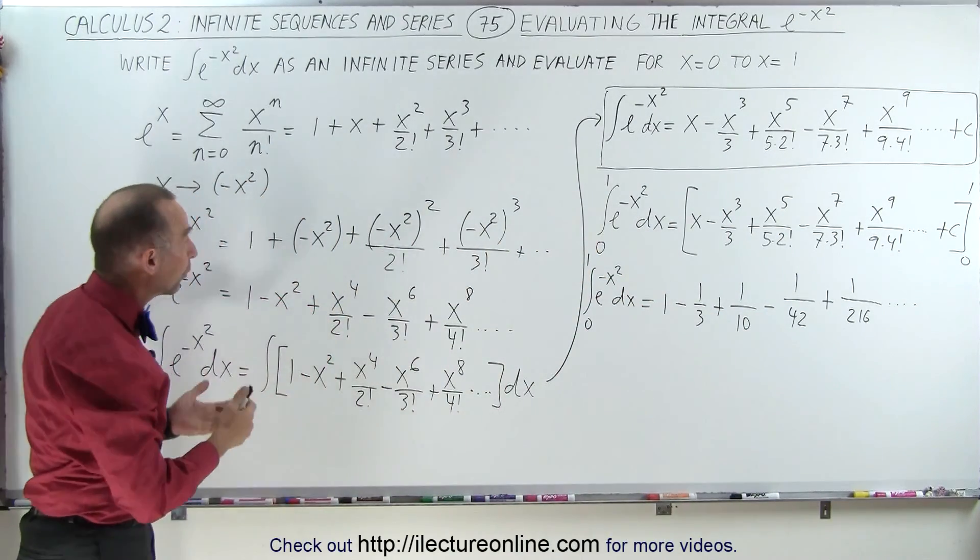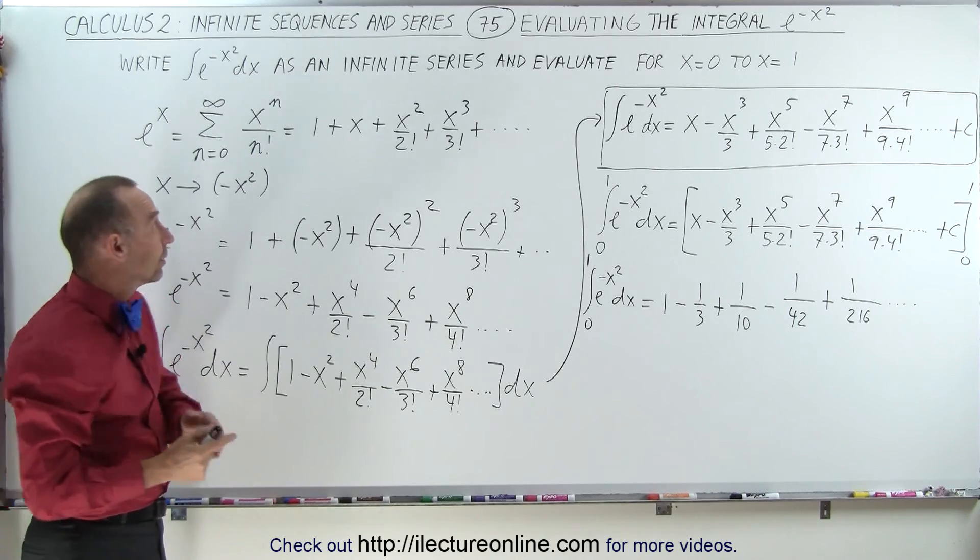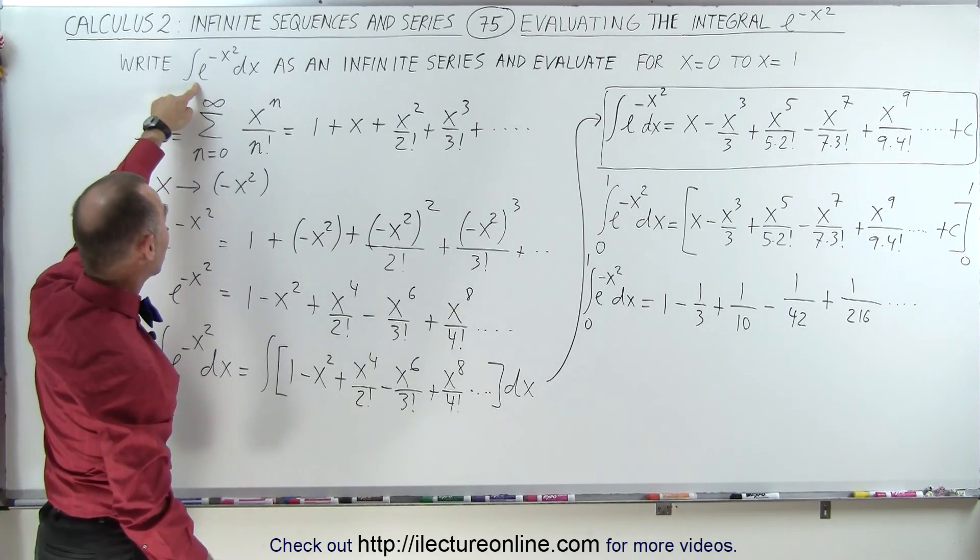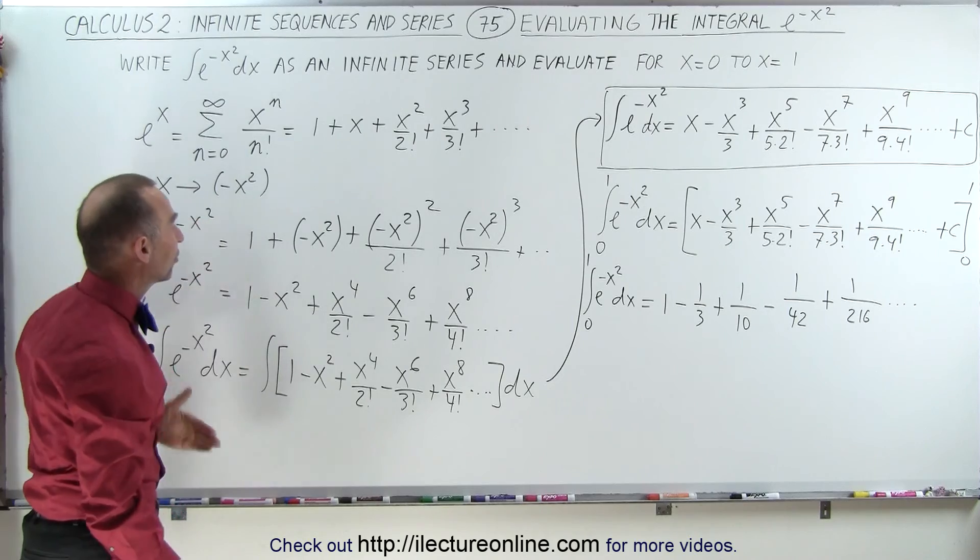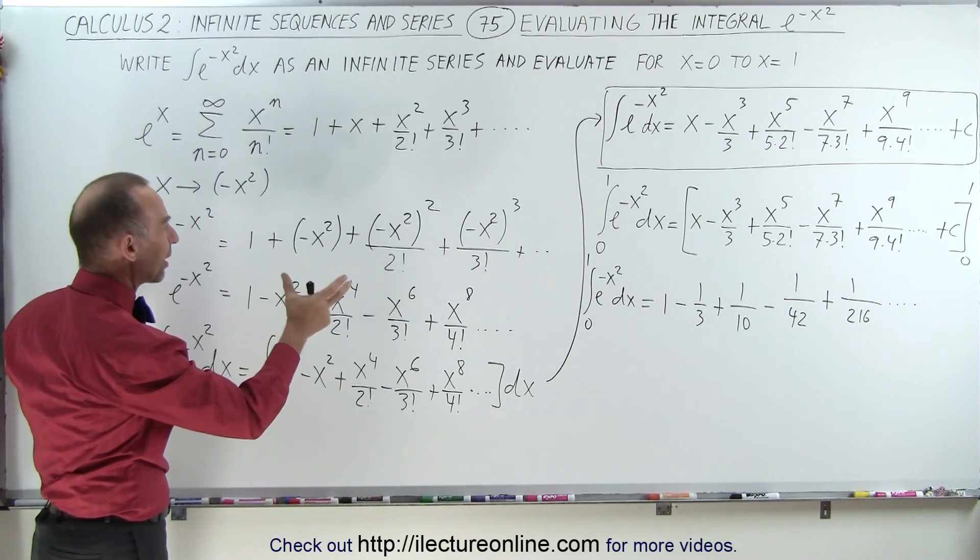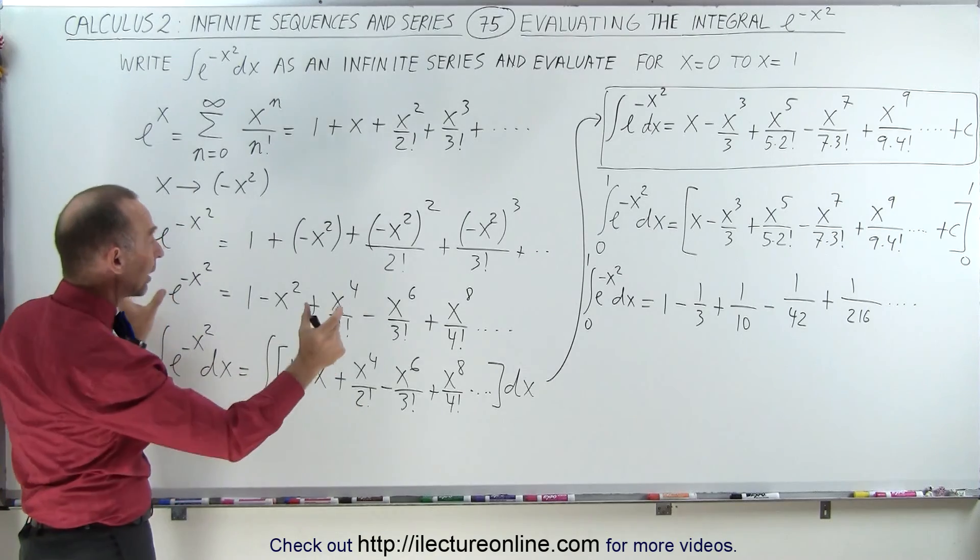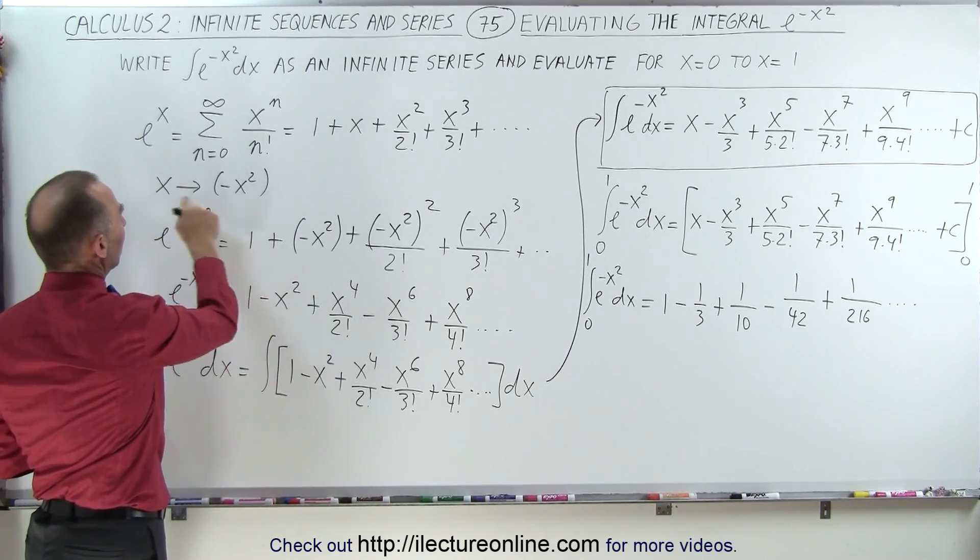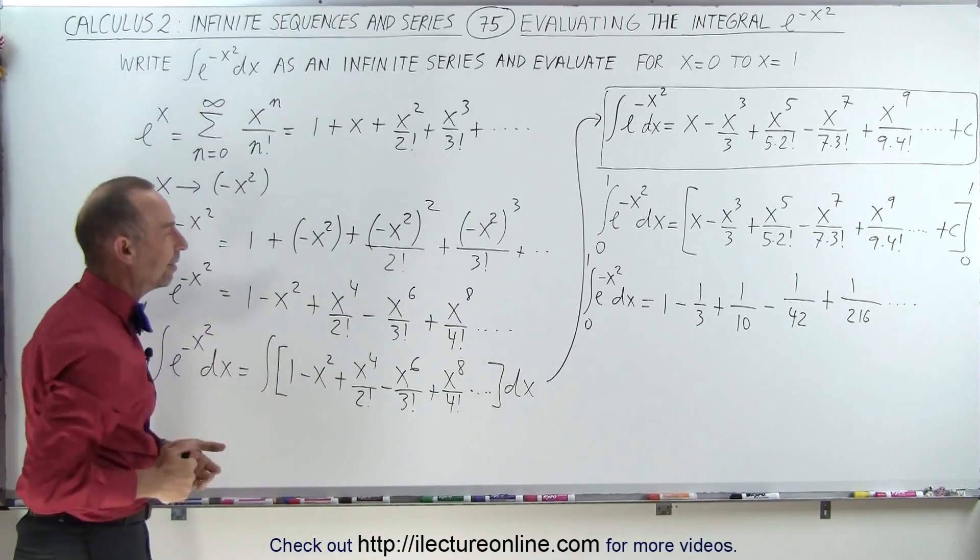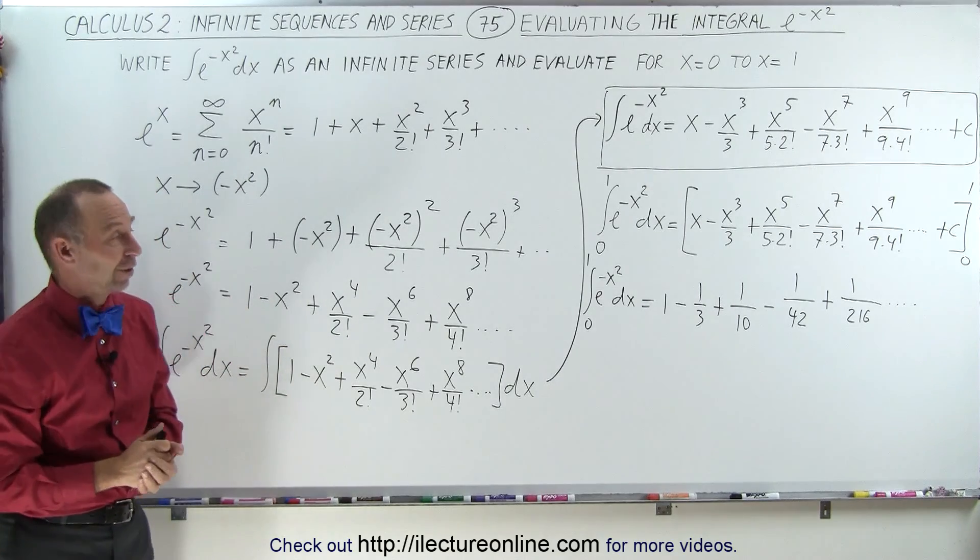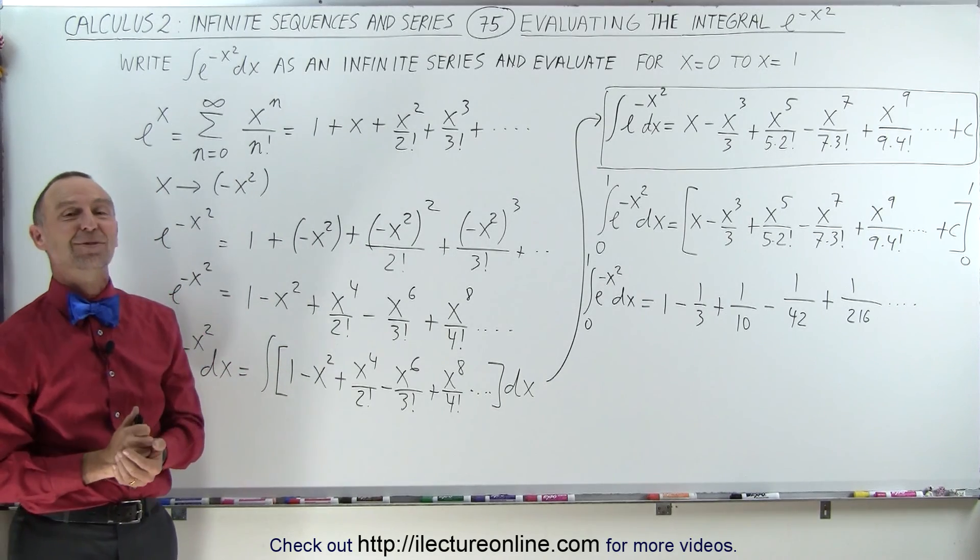So, notice, using Maclaurin series, we can take an integral that otherwise would be very difficult to execute and do it rather simply by finding the approximate equivalent to a Maclaurin series we're familiar with, then making it look exactly the same by making the proper substitution, and then the rest of it is very straightforward, and that's how it's done.